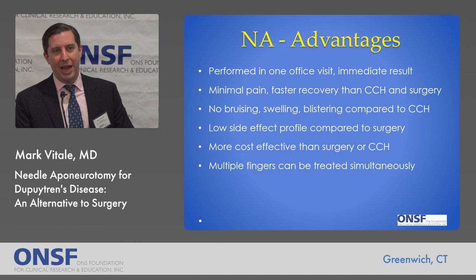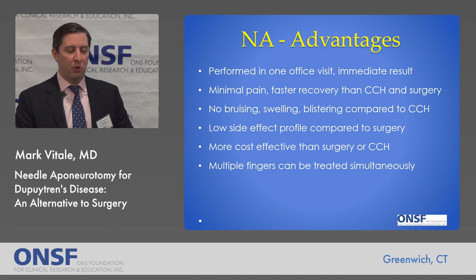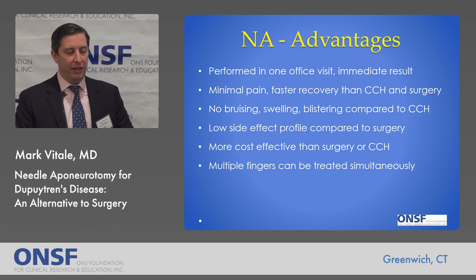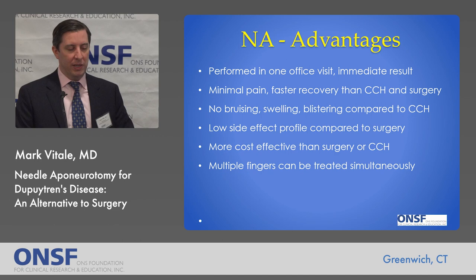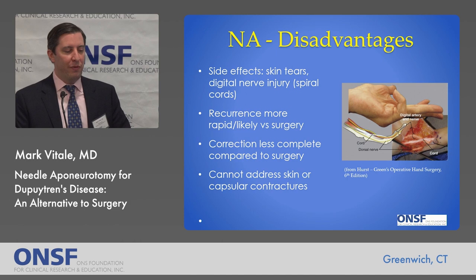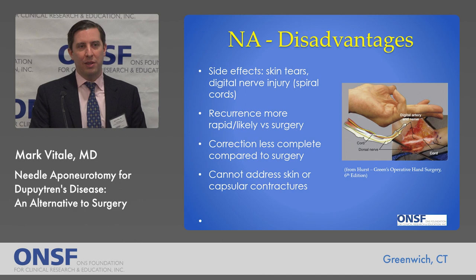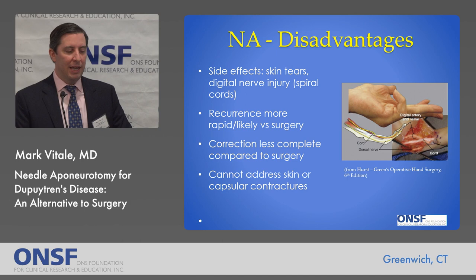The general advantages of needle aponeurotomy are that it's performed in one office visit, unlike collagenase which requires a couple of visits. You have an immediate result, there's minimal pain — definitely less painful than Xiaflex and certainly surgery — with none of the bruising, swelling, or blistering from collagenase or surgery. It has a very low side effect profile, it's the most cost-effective of all available treatments, and multiple fingers can be treated simultaneously, unlike Xiaflex where we can inject up to two joints in one setting. The disadvantages are that skin tears are not uncommon, and spiral cords in the palm that affect the PIP joint wrap around the digital nerves, so there is a risk of injuring the digital nerve — that's why we use intradermal analgesia only and monitor nerve function during the procedure. Correction is also less complete versus surgical treatment.